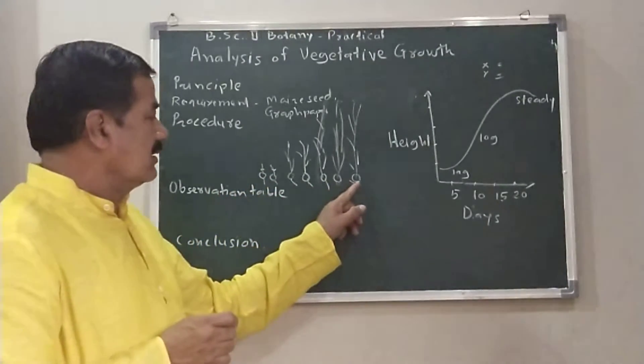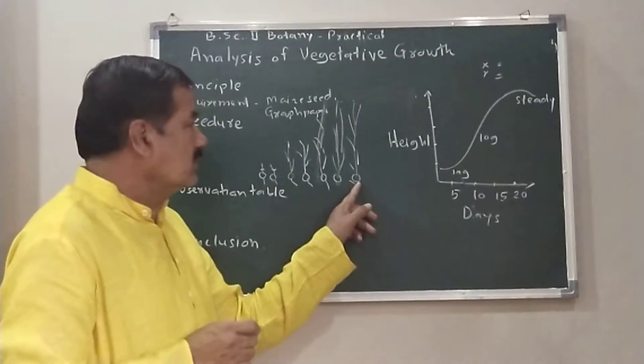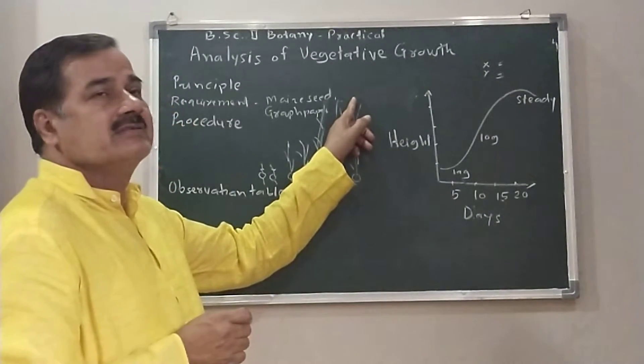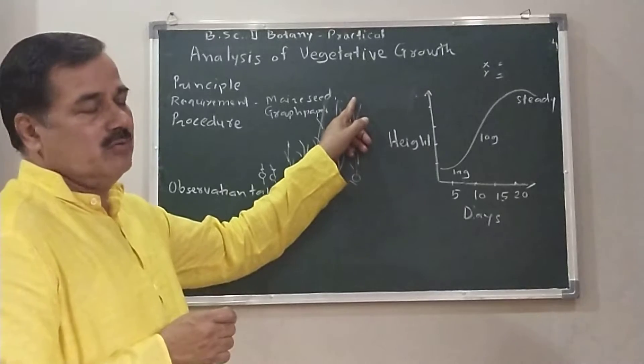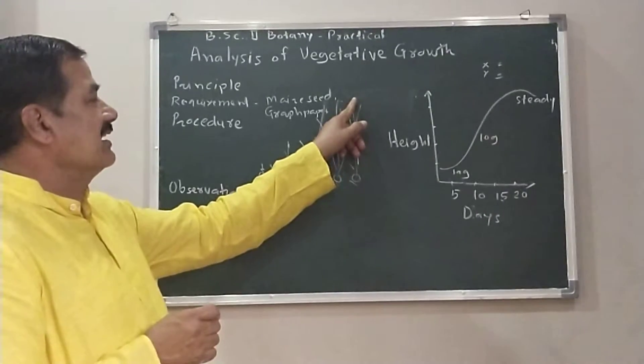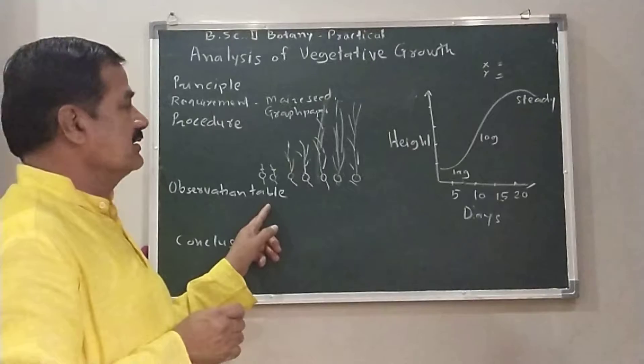Up to the last, from the root to the height of the plants is measured with the help of the scale, and they are made into the observation table.